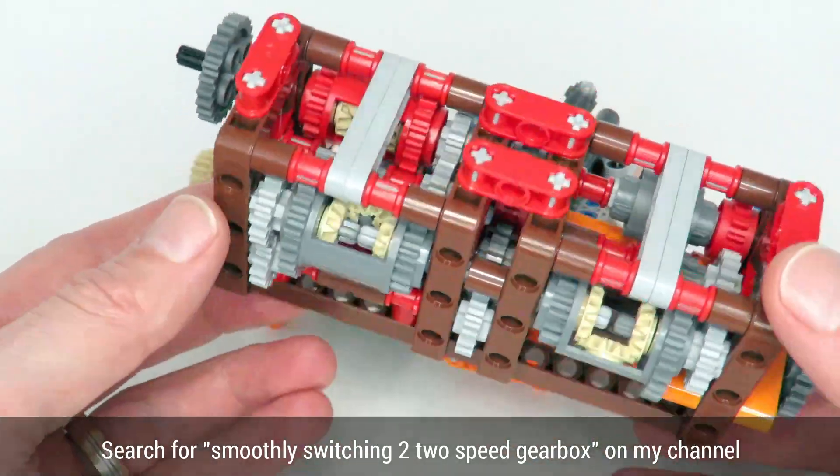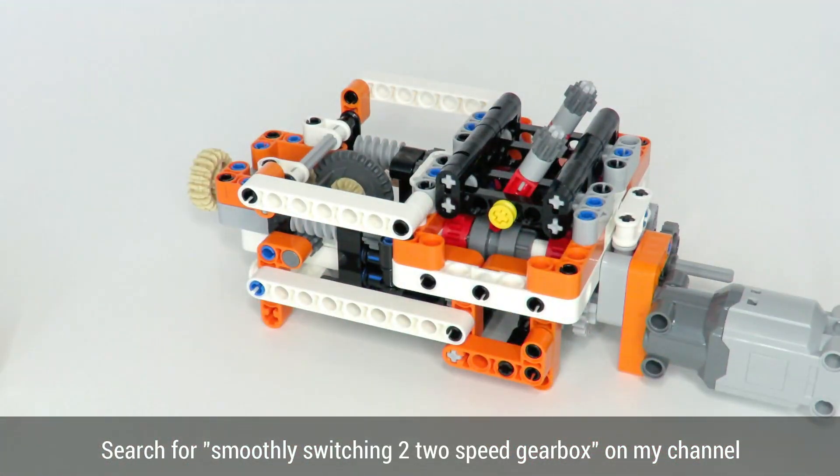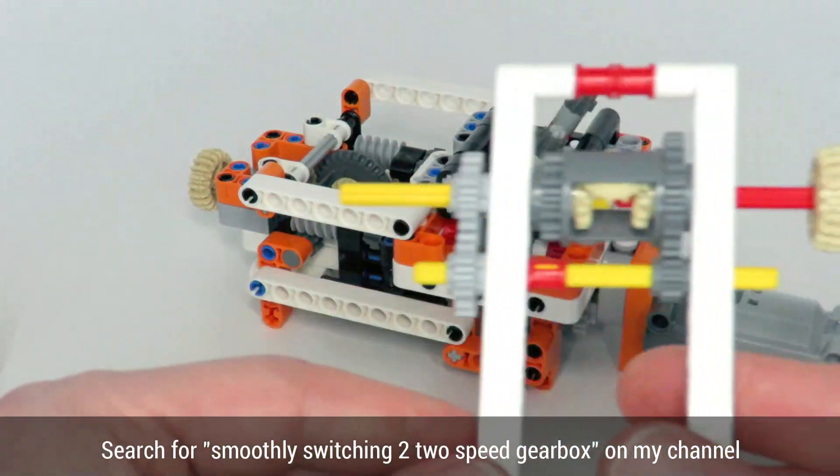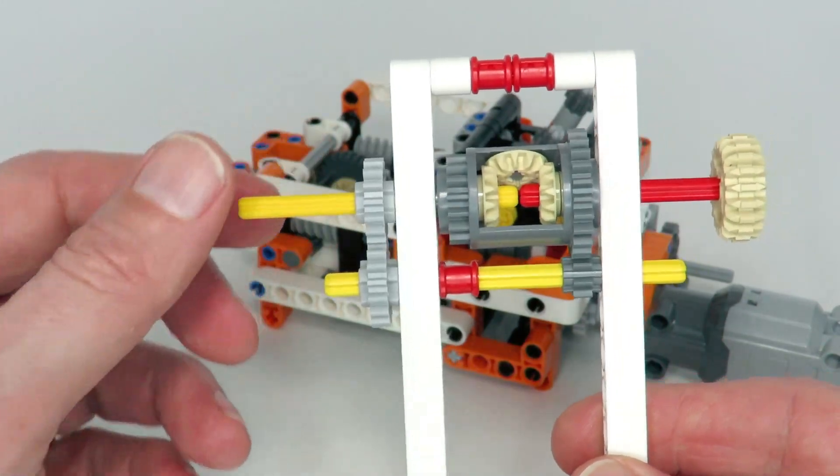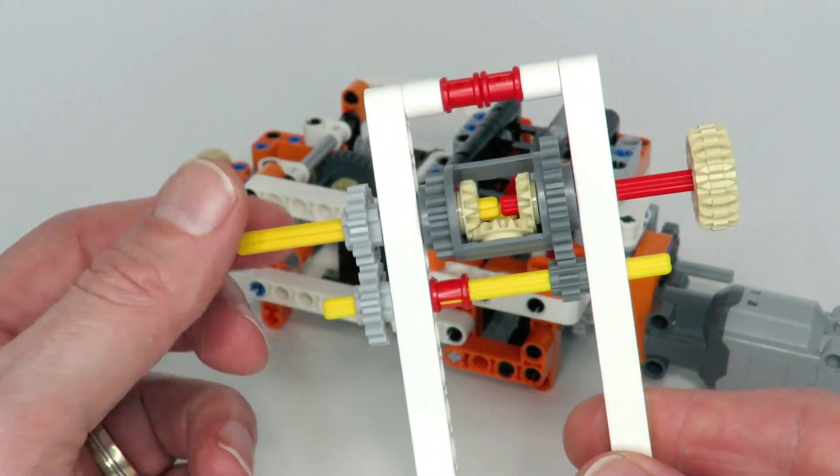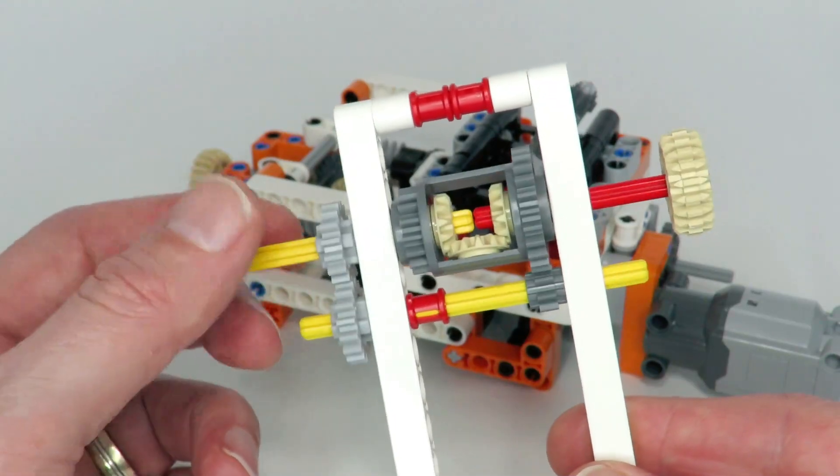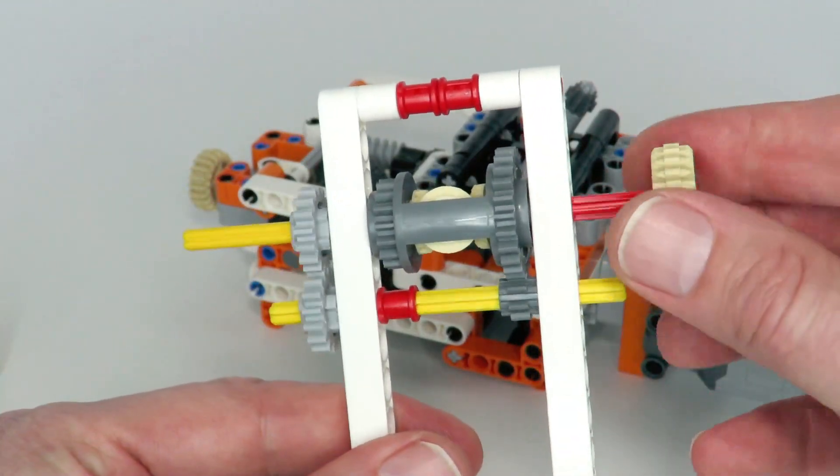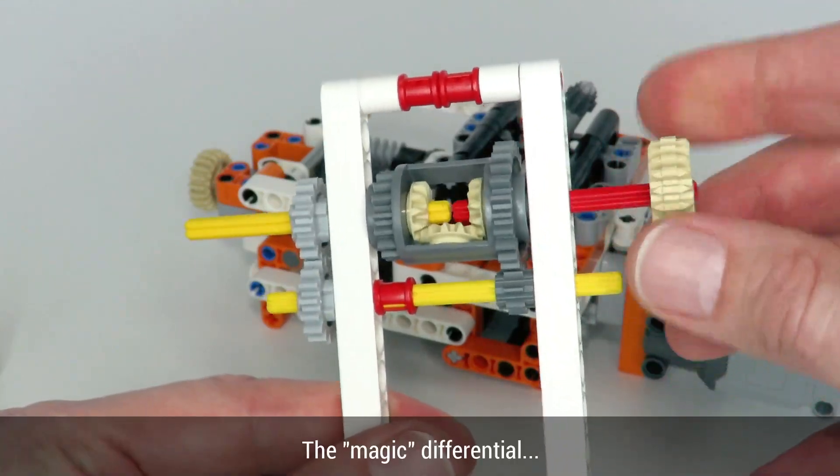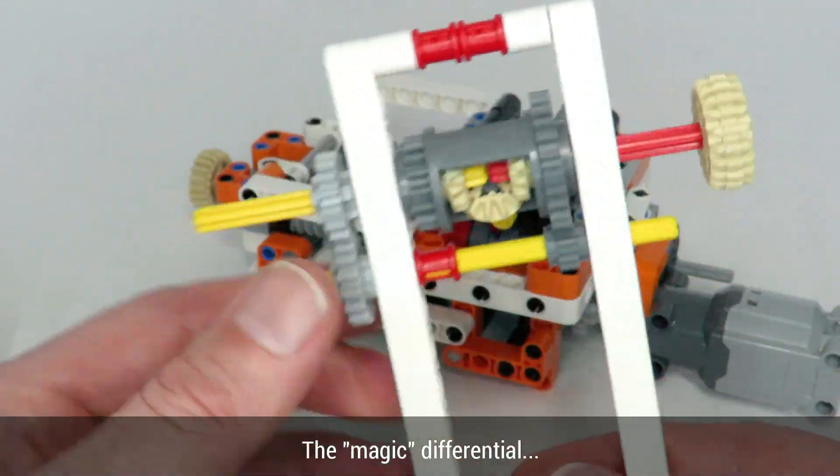However, when I was designing my two-speed automatic gearbox that I presented last week, I ended up using a mechanism that only allows an output to go in one direction. So for example, here with this particular differential gearing mechanism, we can rotate the yellow axle fine and that will rotate the red axle output.